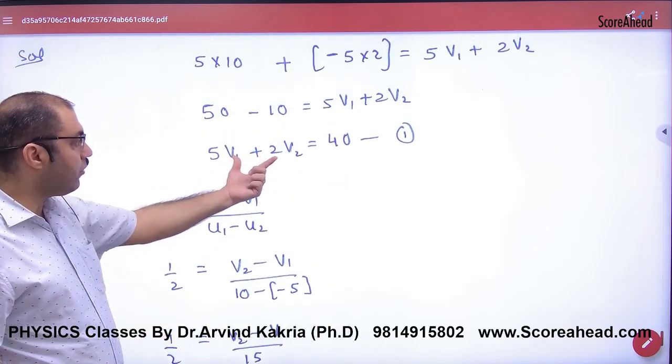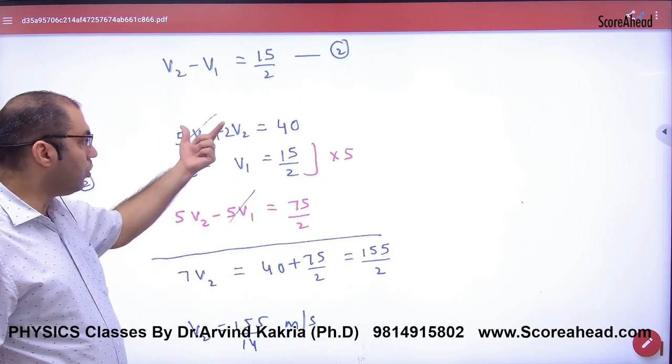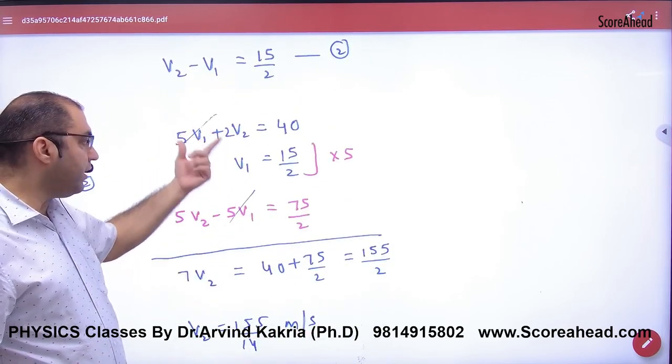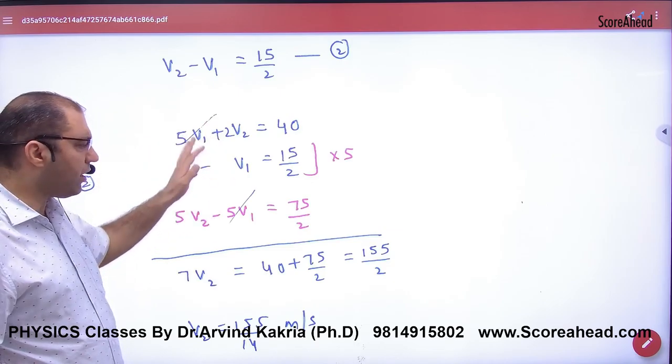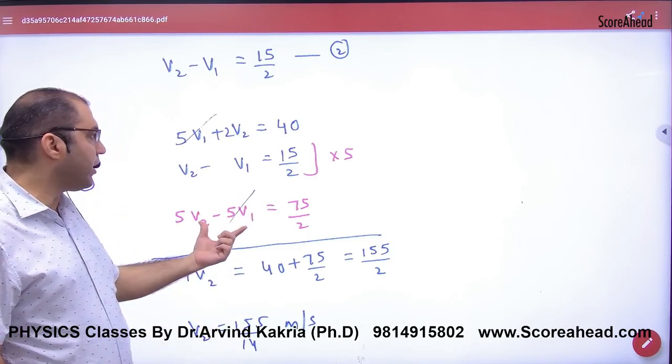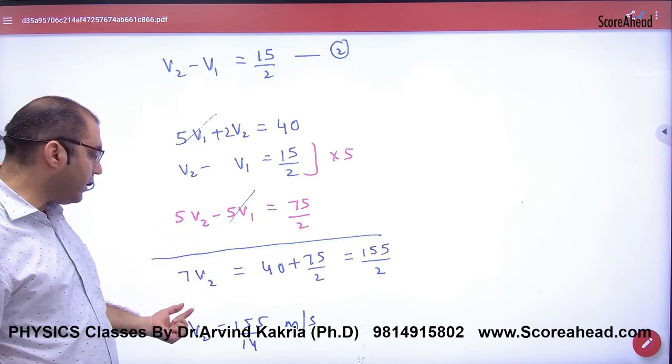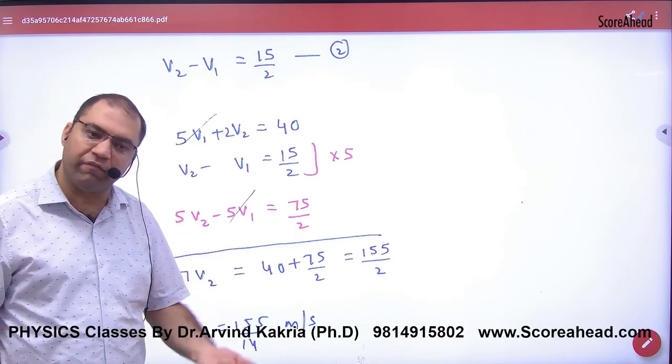Now you have one equation here, one equation here. Write both one below the other and solve them simultaneously. How to do this? That's your work in maths. Like I multiplied this by 5. A new equation came. Why did I multiply? So that when we add these, this term will cancel. So solving, what did we get? V2. V2 came, then V1 came.